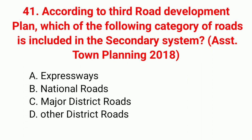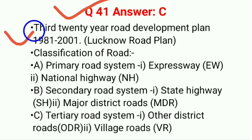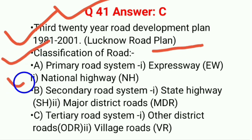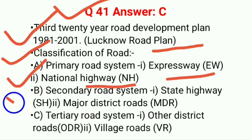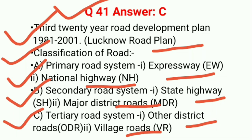Question 41: According to the third road development plan, which category of roads is included in the secondary system? Correct answer C: major district roads. The third 20-year road development plan (1981–2001, Lucknow road plan) classifies roads as: primary system (expressways and national highways); secondary system (state highways and major district roads); tertiary system (other district roads and village roads).